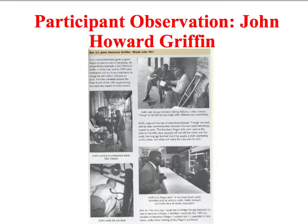Let's now look at some studies you could use in the exam if you get a question on participant observation. One of the practical problems of doing participant observation is gaining access to the group, particularly for covert observation. Some researchers have gone to great lengths to pass as one of the group. An extraordinary example is John Howard Griffin, a white man who in 1959 used medication and sunlamp treatments to change his skin colour and pass as black, then travelled around the deep south of the United States experiencing the impact of white racism through participant observation.